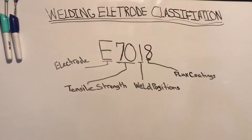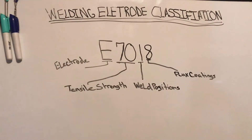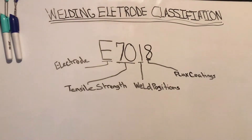There are several factors to choosing an electrode for a project. One factor is the base metal and its properties. Another factor is the thickness of the base metal. Another one is your joint design and the fit-up of the joint, as in the position of the joint you're welding, and how much of a gap or lack thereof there is. The position of the weld joint — as in flat, horizontal, or vertical — will also affect the size of the electrode as well as the thickness of base metal.